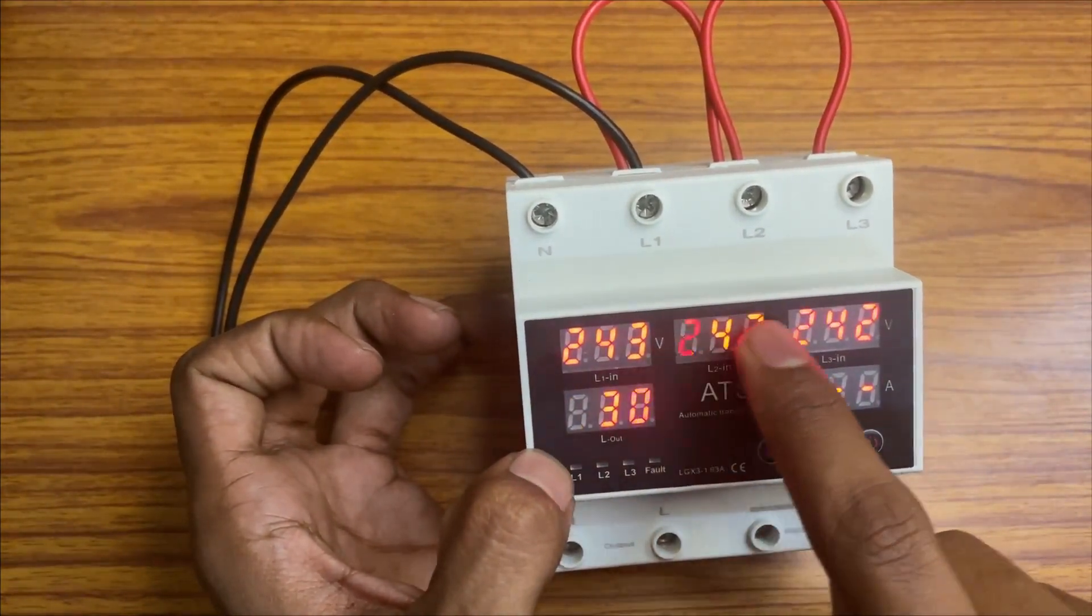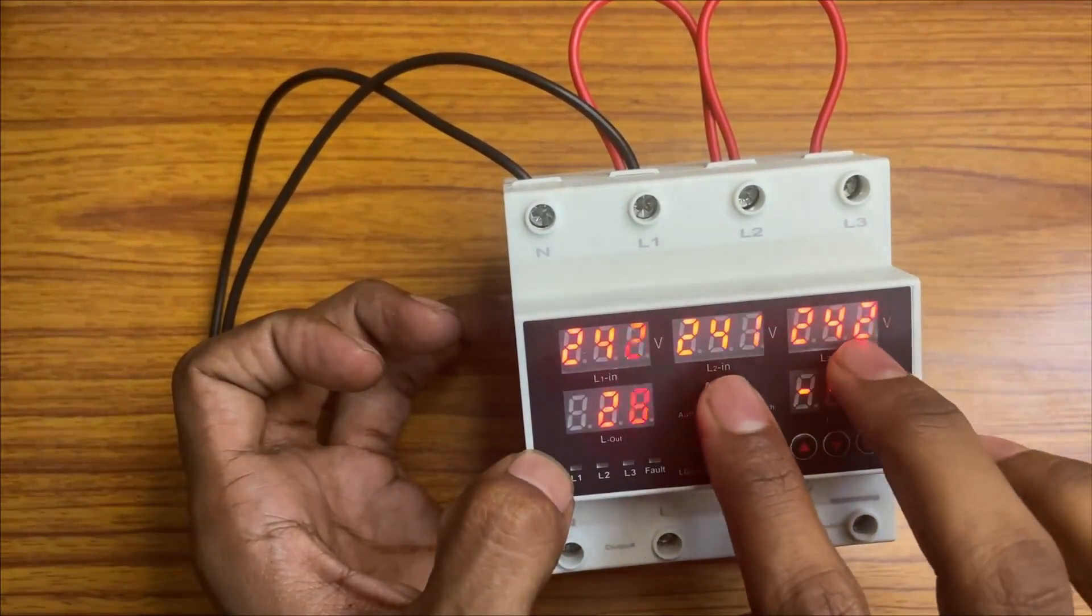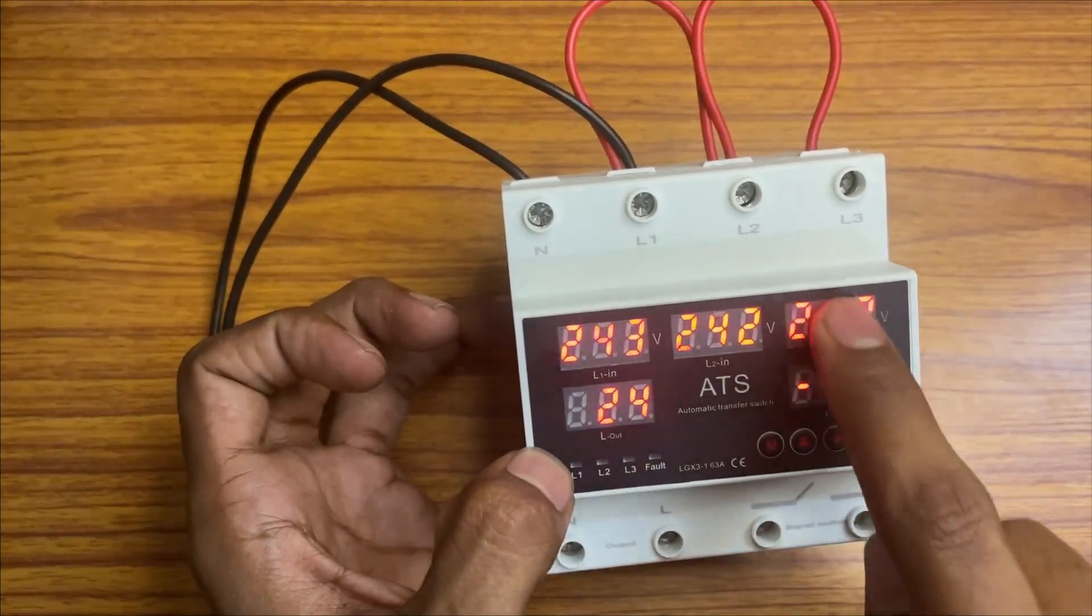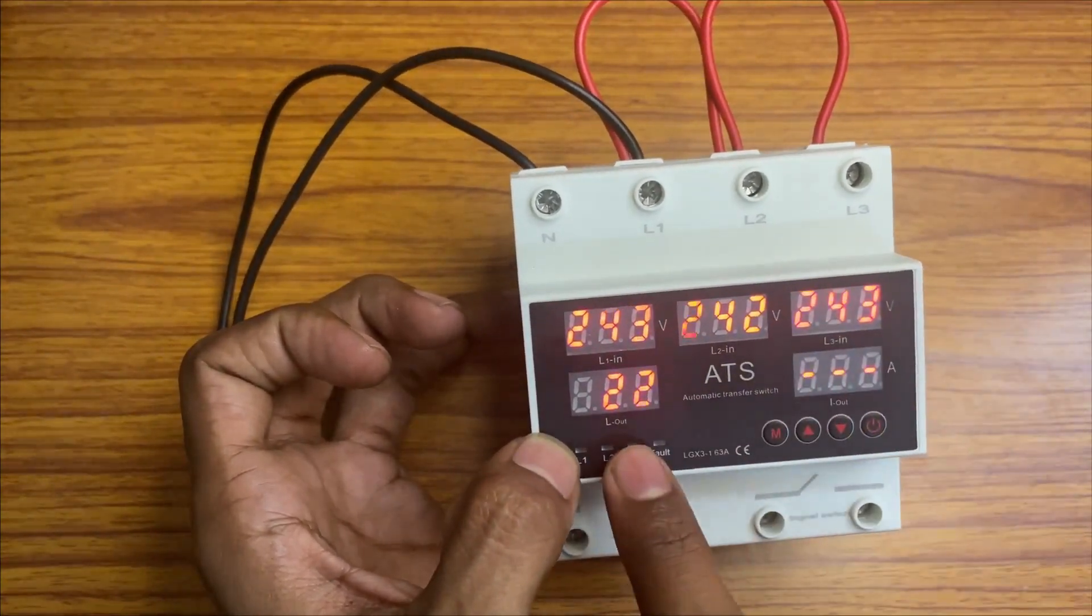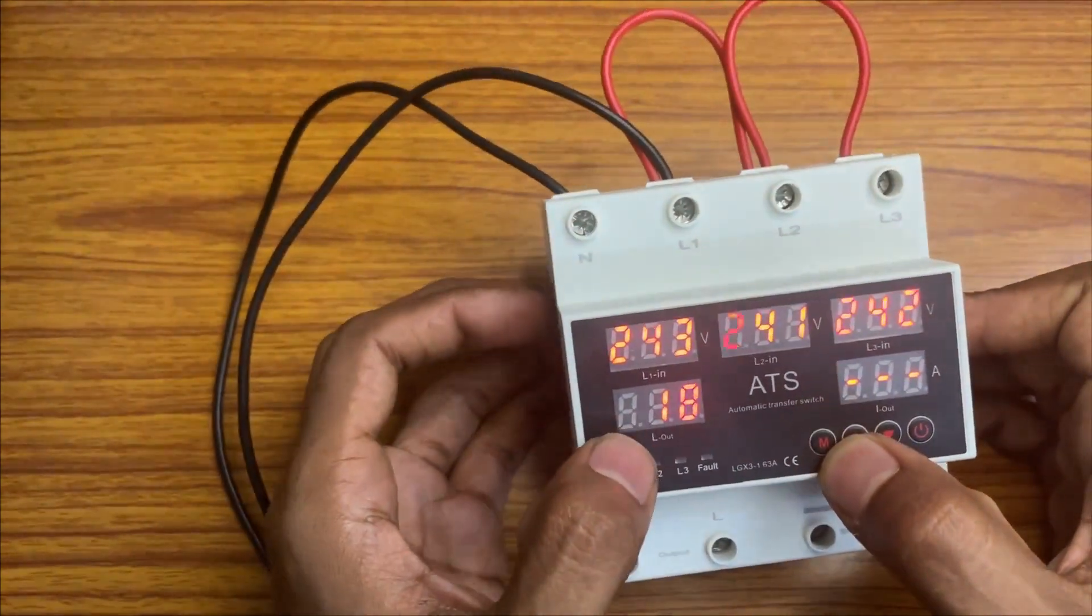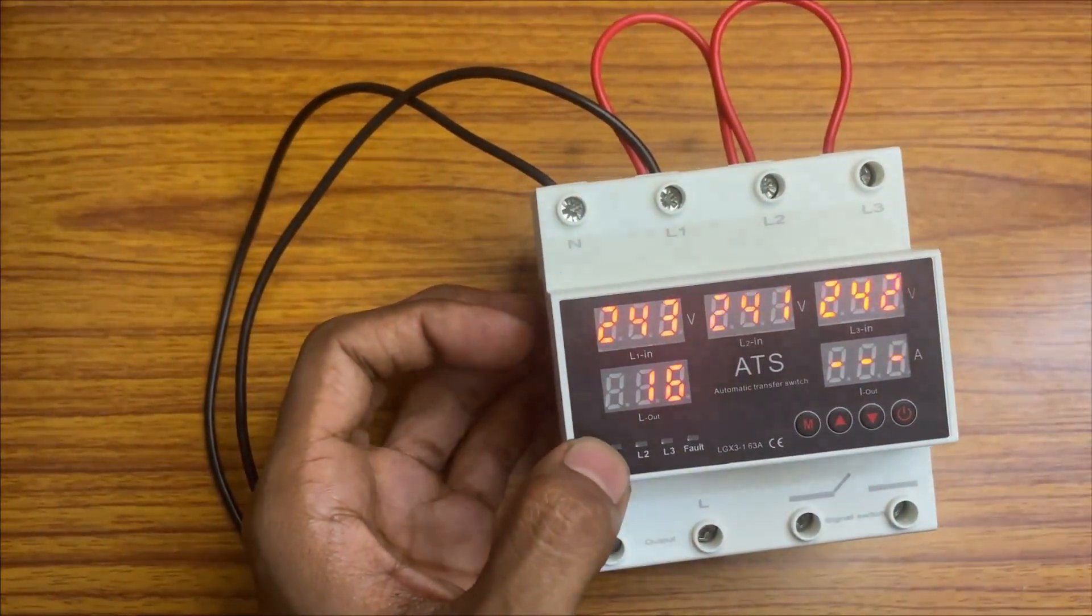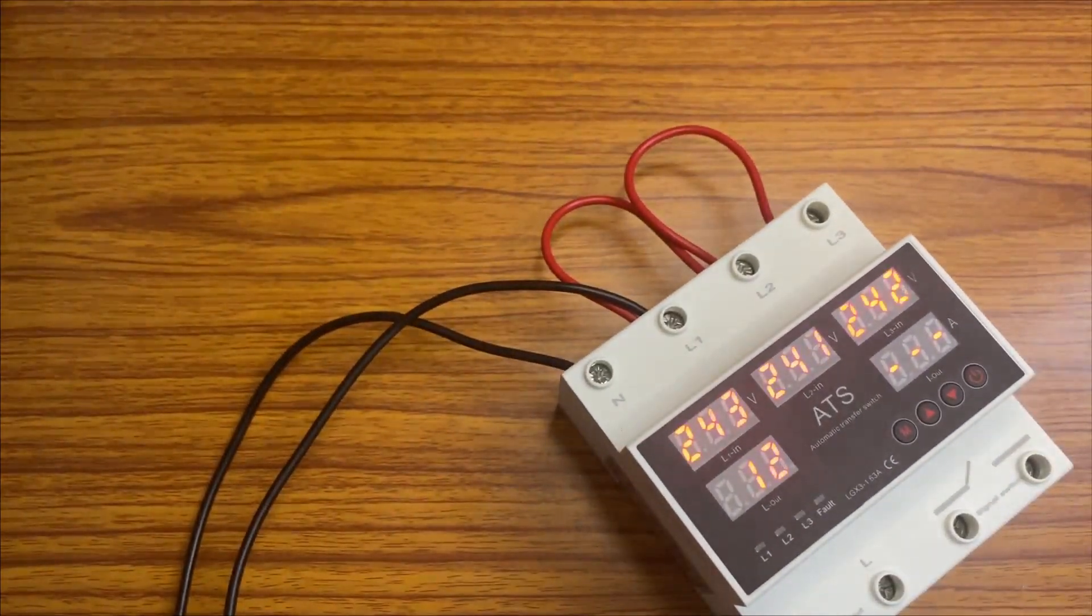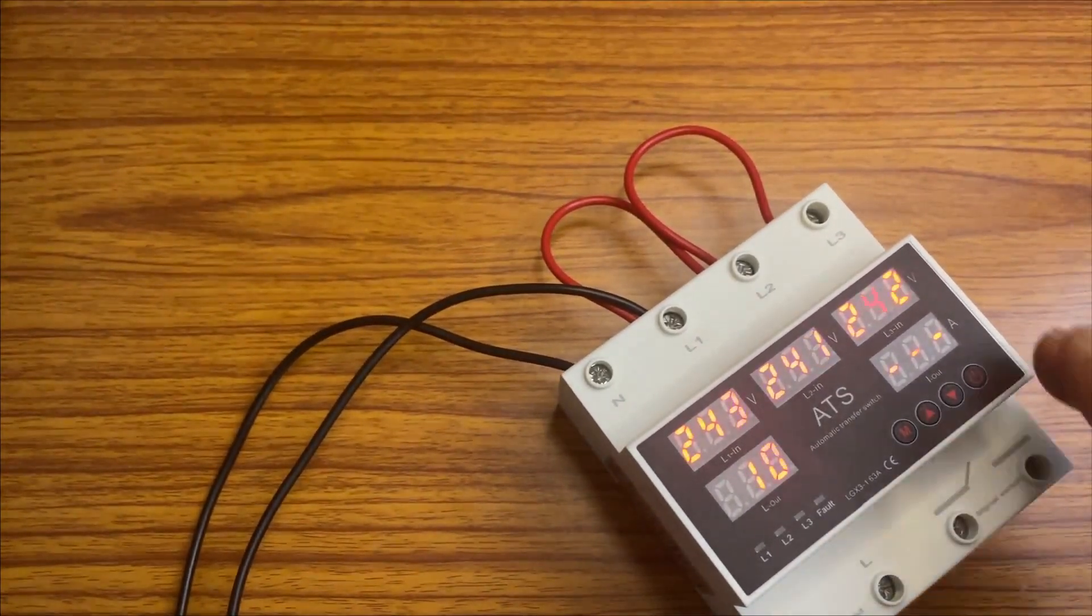This is auto option. Auto option means it will detect which voltage is correct. If you keep it in auto, if one voltage is over voltage, it will check with the rest of the two phases and give the output from that phase. If this is over voltage it will go for this and give the output from this phase. This is the main feature. So we have done the setting like auto.